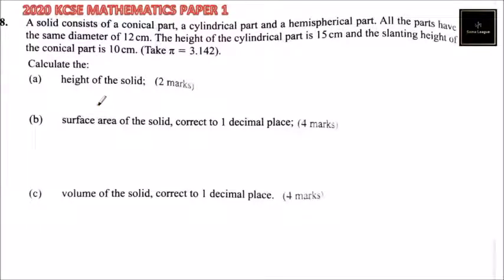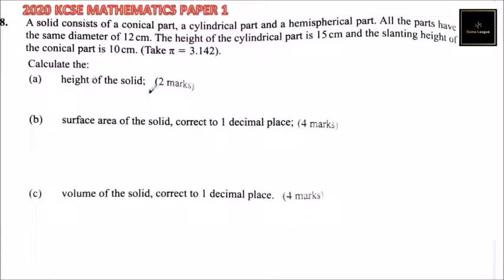This is question number 18. We are told a solid consists of a conical part, a cylindrical part, and a hemispherical part. All the parts have the same diameter of 12 cm. The height of the cylindrical part is 15 cm, and the slanting height of the conical part is 10 cm. You take pi to be 3.14 to calculate the height of the solid.